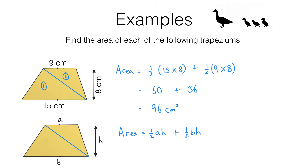Now we can factorise this expression, and if we do that our formula becomes ½h multiplied by (a + b).